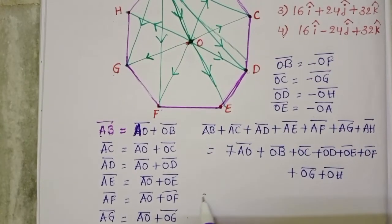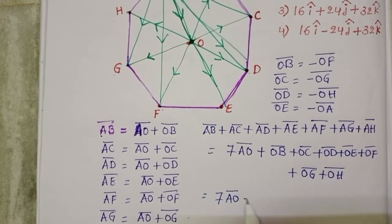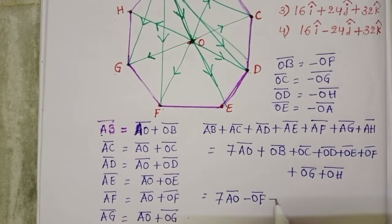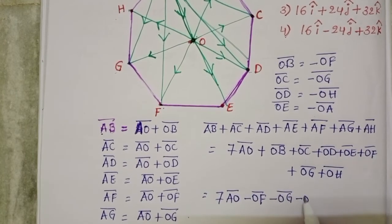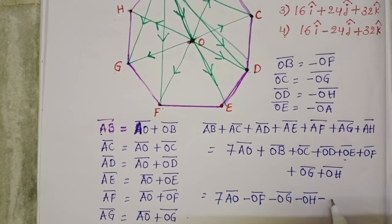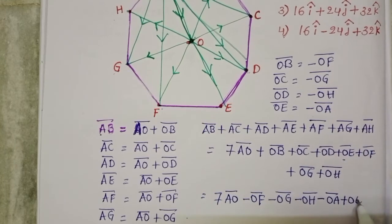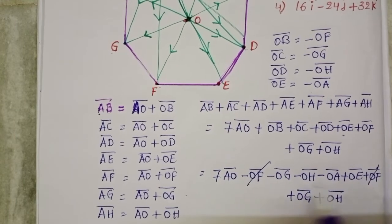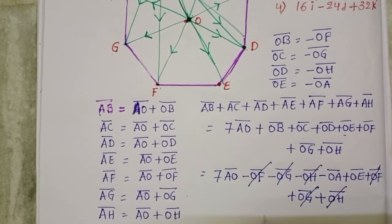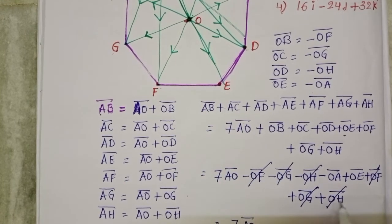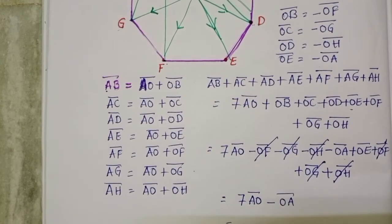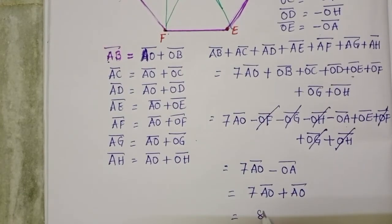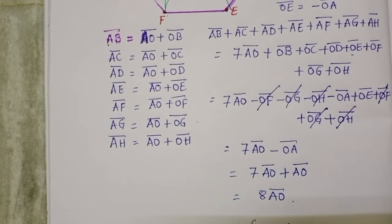Now substitute: 7 AO bar, and in place of OB put minus OF, in place of OC put minus OG, in place of OD put minus OH, in place of OE put minus OA bar, plus OE bar, OF bar, OG bar, OH bar. Here OF, OG, OH get cancelled with each other, leaving 7 AO bar minus OA bar. When we reverse OA bar, it becomes plus AO bar, giving us 8 AO bar total.